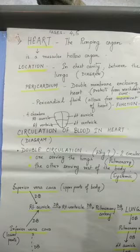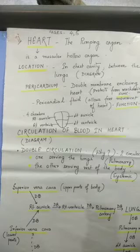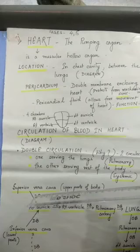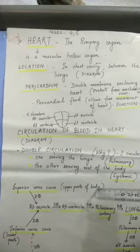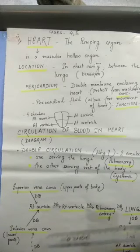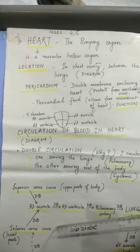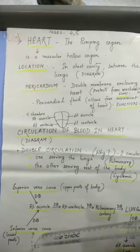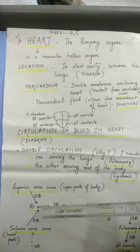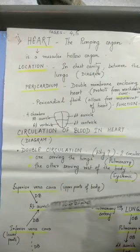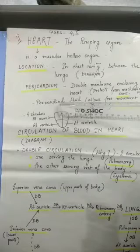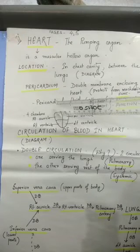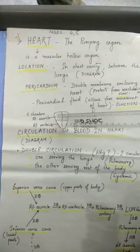Now let us start with the circulation of blood. Blood from different parts of the body, mainly deoxygenated blood, comes from the superior and inferior vena cava. Superior vena cava brings blood from upper parts of the body. Inferior vena cava brings blood from lower parts of the body. They bring deoxygenated blood and pour it into the right auricle. Then the deoxygenated blood from right auricle goes to right ventricle, because of gravity.